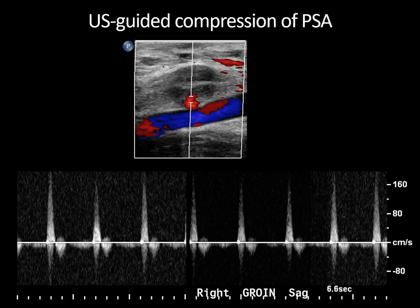The arterial waveform in the neck is unusually high resistance, likely because the pseudoaneurysm sac is now occluded. There's still a sense of the to-and-fro pattern — flow above the baseline towards the pseudoaneurysm during systole, then reversal of diastolic flow away from the sac during diastole.